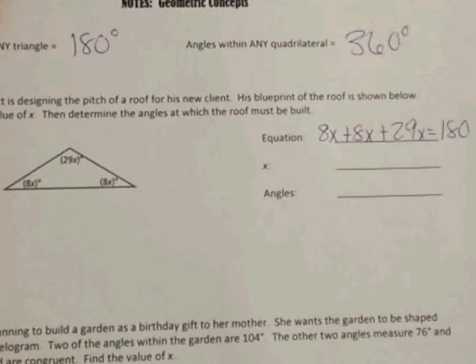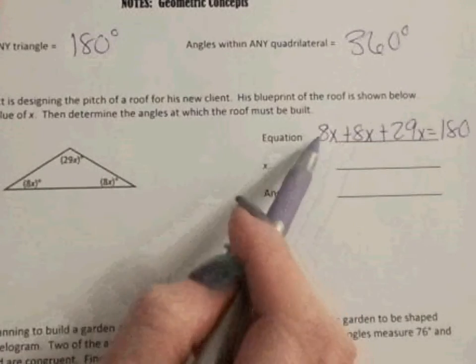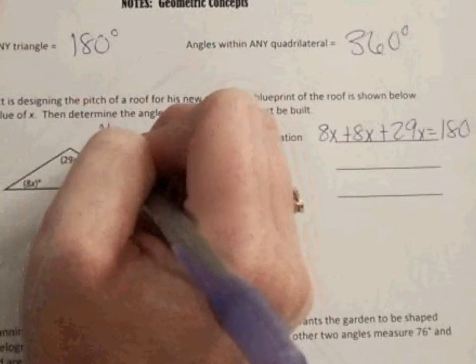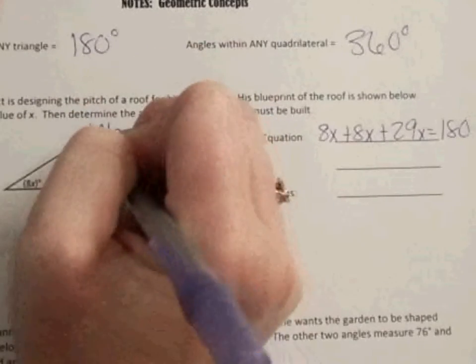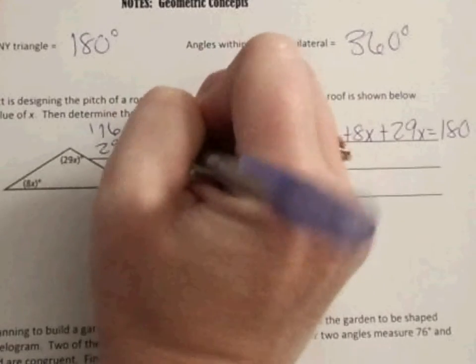So we know that all angles in a triangle equal 180. So I'm going to start there. I'm going to say that 8x plus 8x plus 29x all equals 180. So I'm going to come over here to the side and I'm going to start combining things. I know that 8 and 8 is 16, so 16 plus 29, and I get 45.